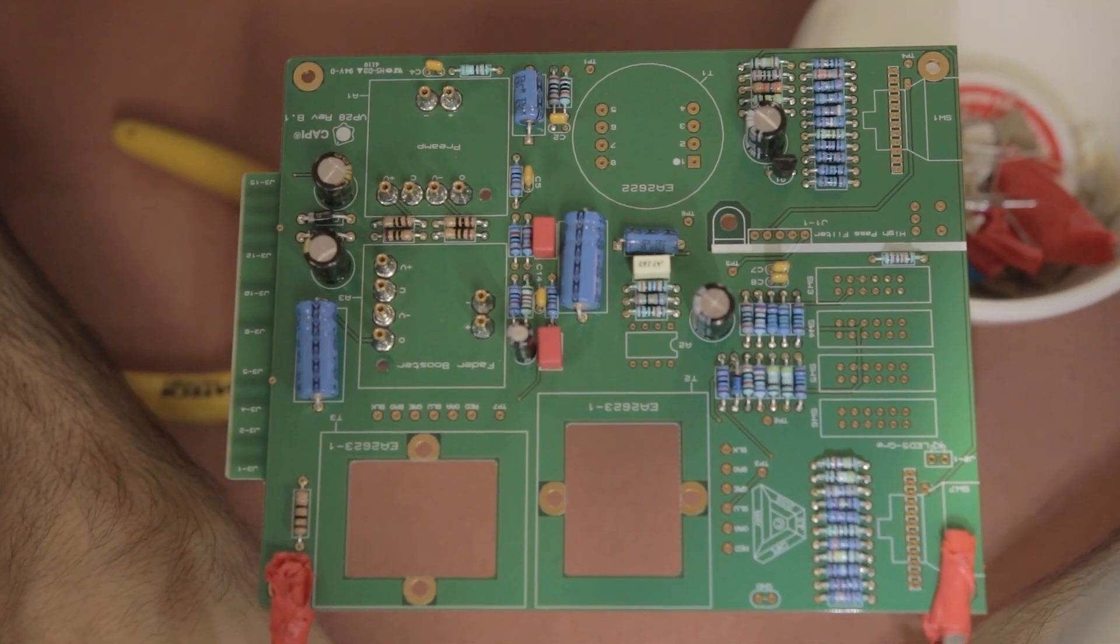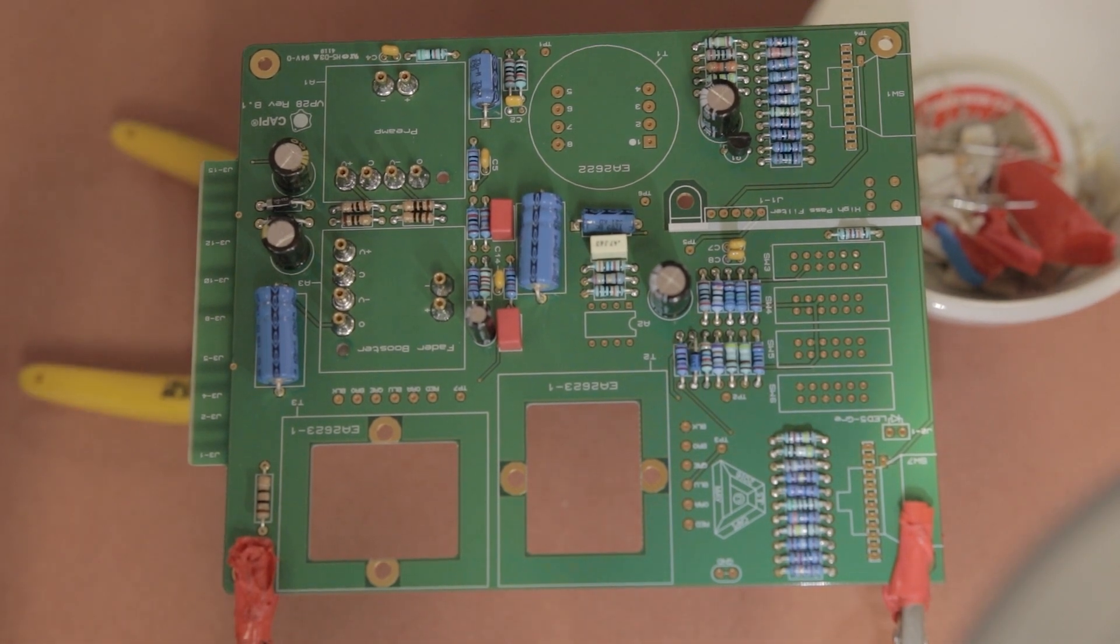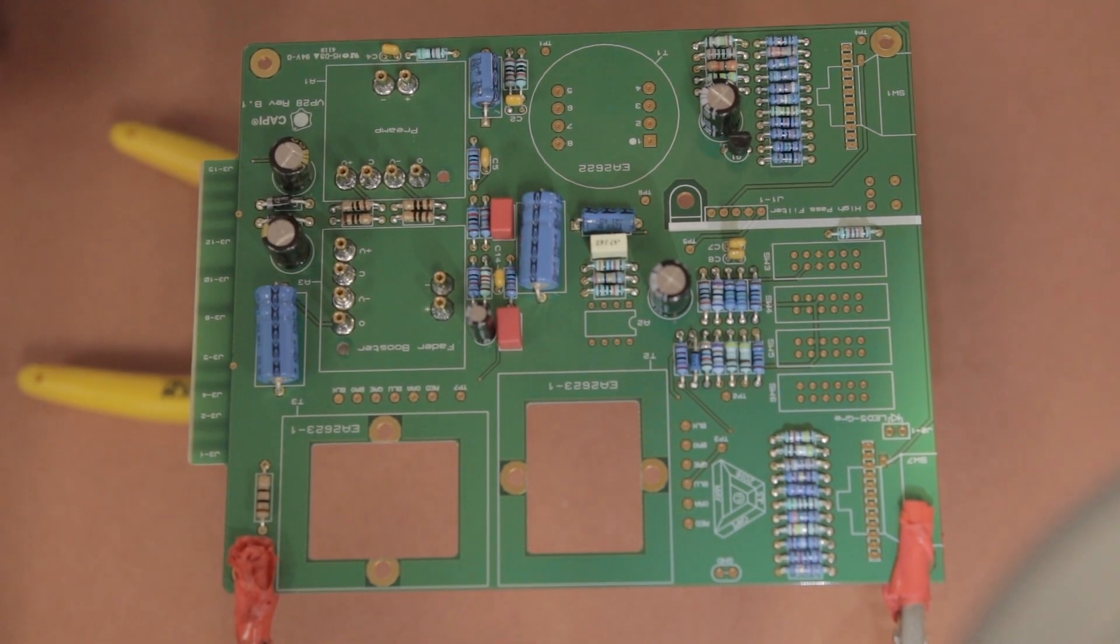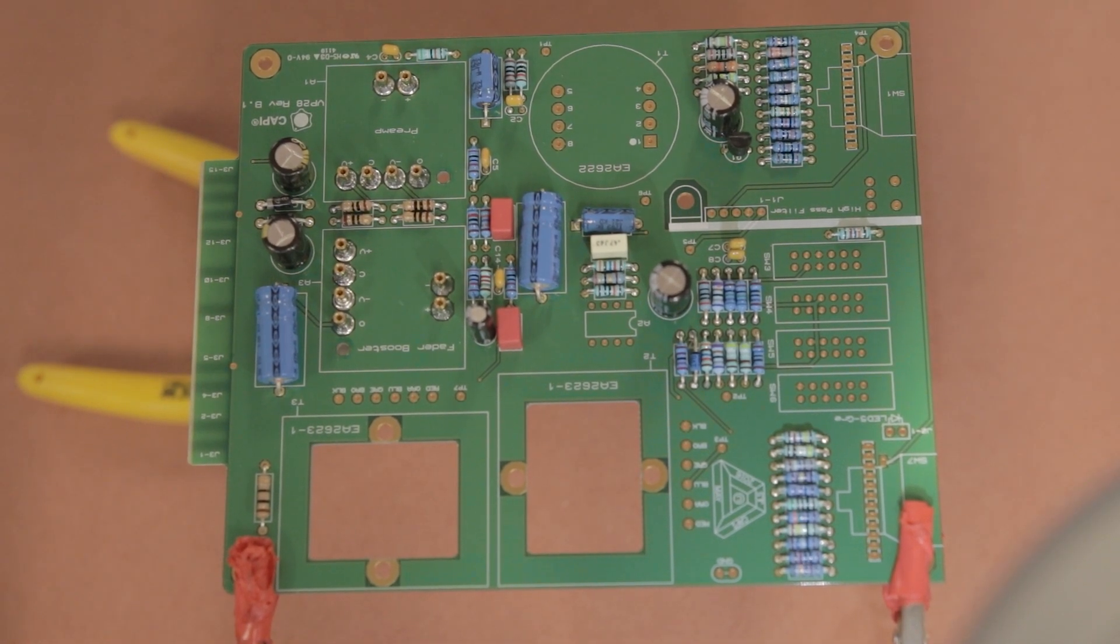That's where we'll leave it for part one of this build. In the next build, we'll start on the switches that need to be soldered to the main PCB board and then we'll continue on with some of the other parts of the assembly as well. So that's part one of the Cappy VP28 mic preamp build. Don't forget to hit like and subscribe. I'm Mitch from thediyrecordingstudio.com and I'll catch you soon.